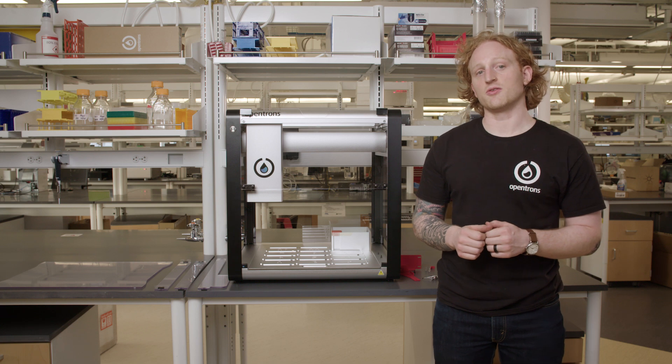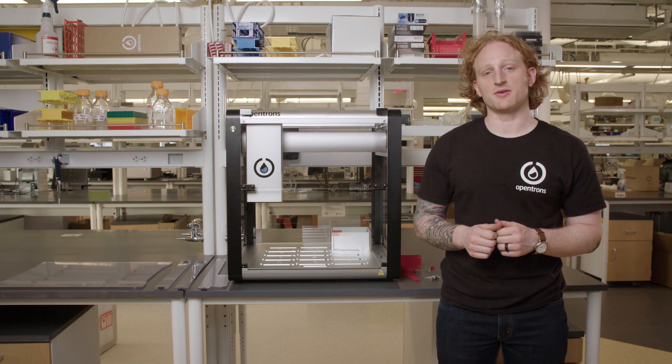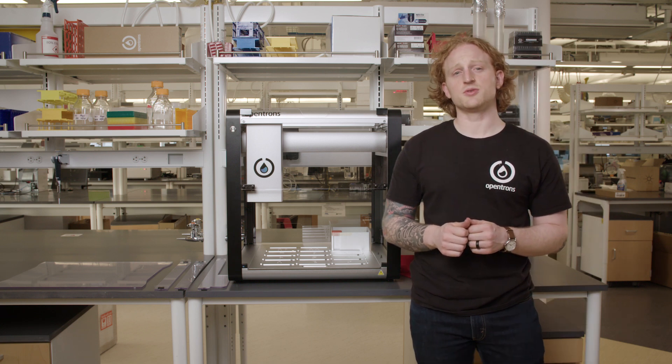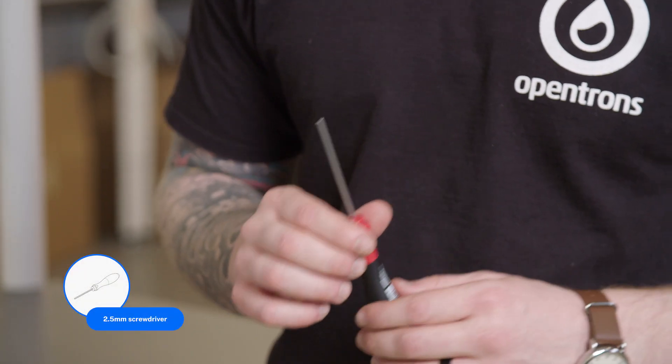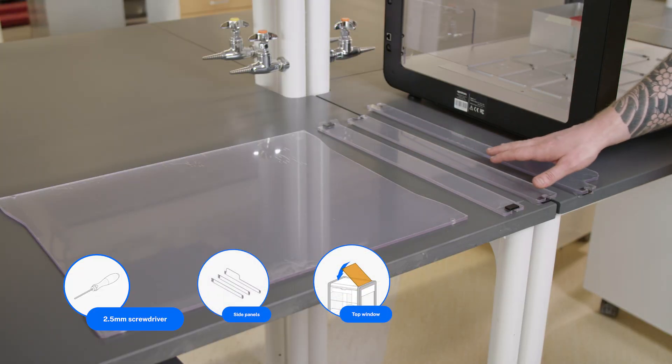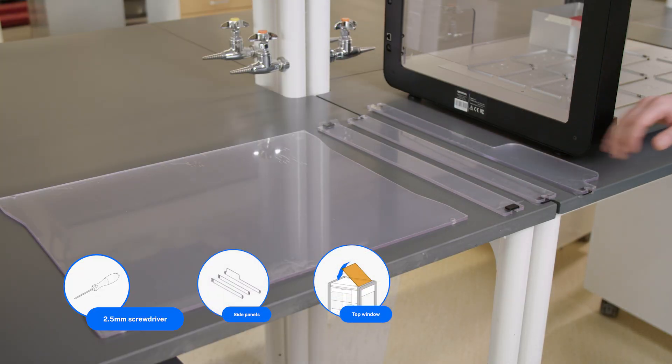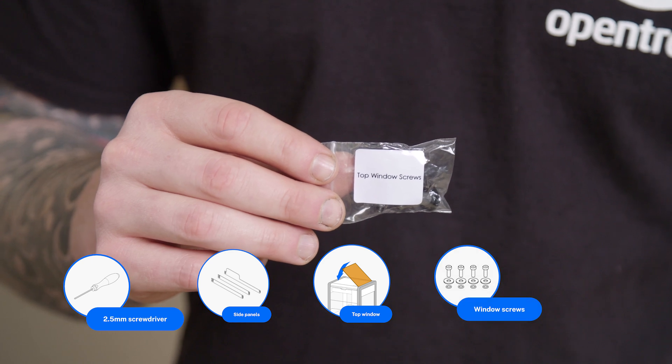To install the top window, I will need a 2.5 mm hex screwdriver, the windows that we set aside while unboxing the OT2, and the top window screws that were in the accessory box.